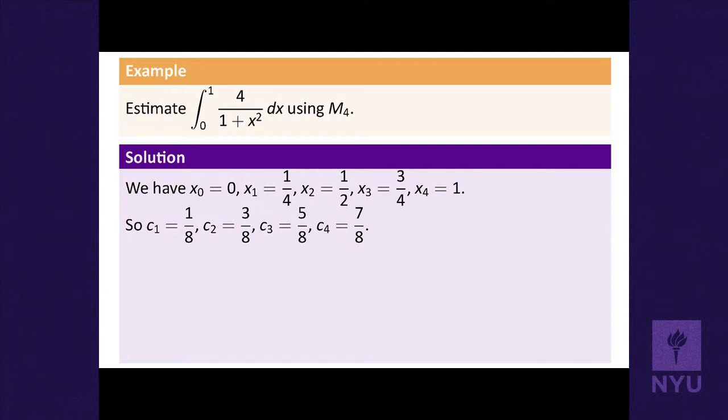We pick the midpoint of each interval. Midpoint between 0 and 1/4 is 1/8. Midpoint between 1/4 and 1/2 is 3/8. Midpoint between 1/2 and 3/4 is 5/8. And the midpoint between 3/4 and 1 is 7/8. These are the x-values we plug into the function.